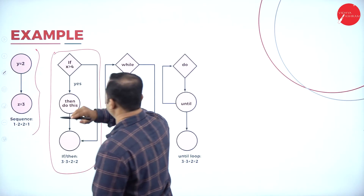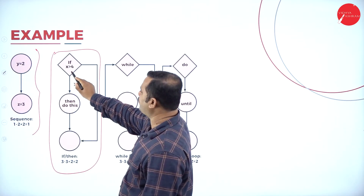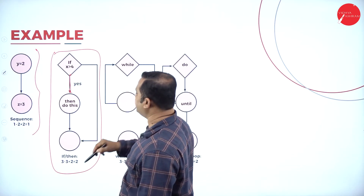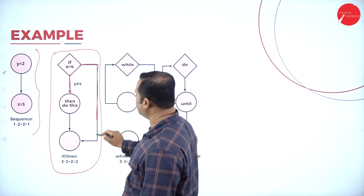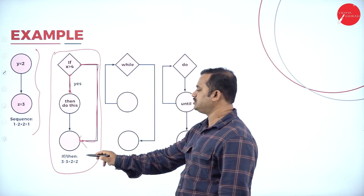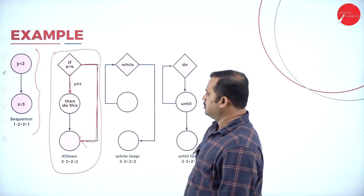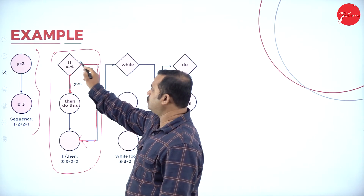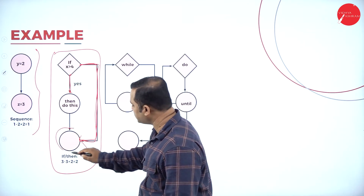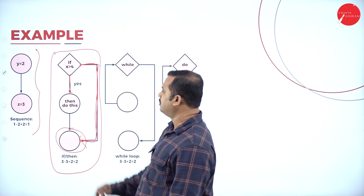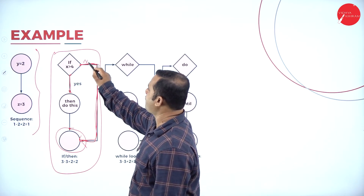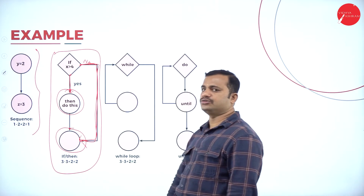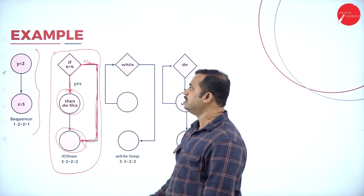If the condition checks whether the value of x is greater than 4, we move to the if block; otherwise, we move to the else block. For instance, 3 minus 3 plus 2 equals 2 — since 2 is not greater than 4, we move to the else block, so branching takes place at that point. If the condition is yes, branching goes to the if block itself. That is how we calculate the complexity of a program.